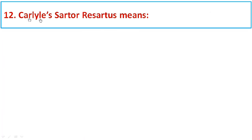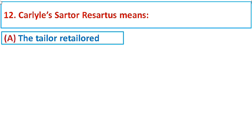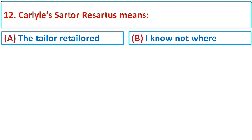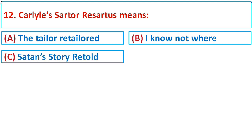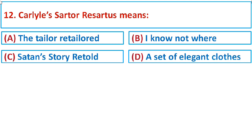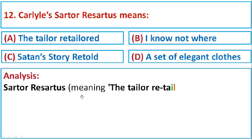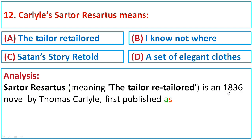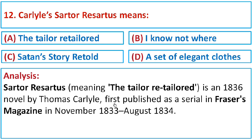Question number twelve: Carlyle's Sartor Resartus means Option A: The Tailor Retailored, Option B: I Know Not Where, Option C: Satan's Story Retold, or Option D: A Set of Elegant Clothes. Sartor Resartus, meaning The Tailor Retailored, is an 1836 novel by Thomas Carlyle, first published as a serial in Fraser's Magazine from November 1833 to August 1834. The correct option is A: The Tailor Retailored.